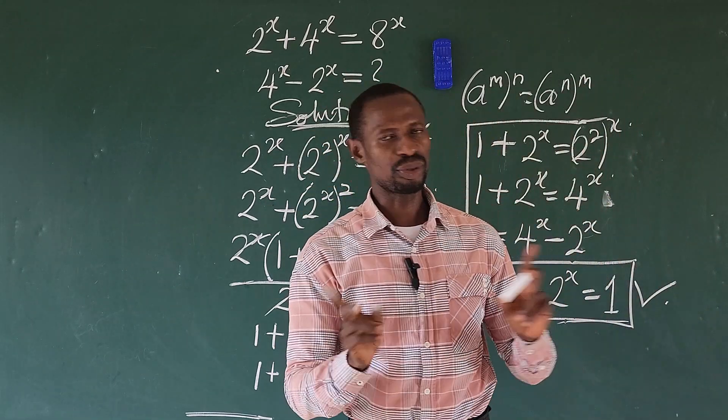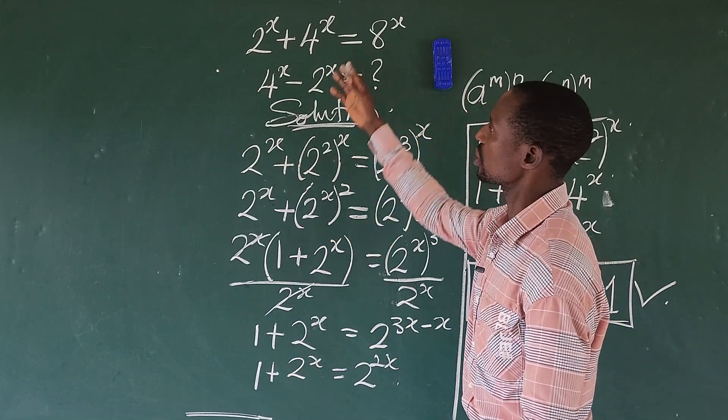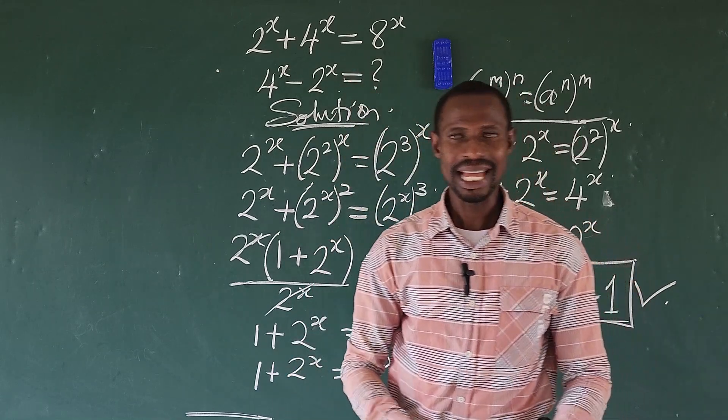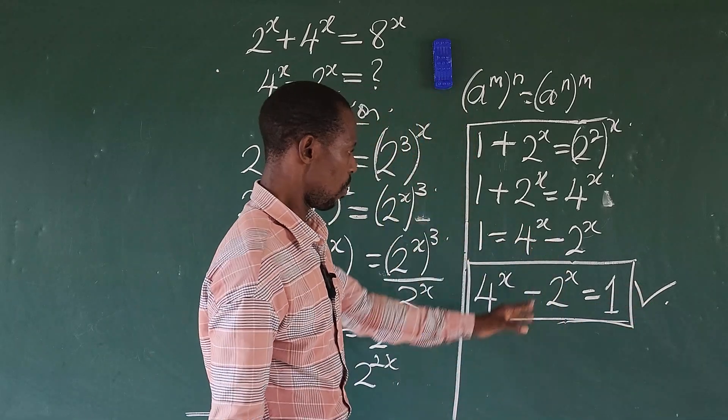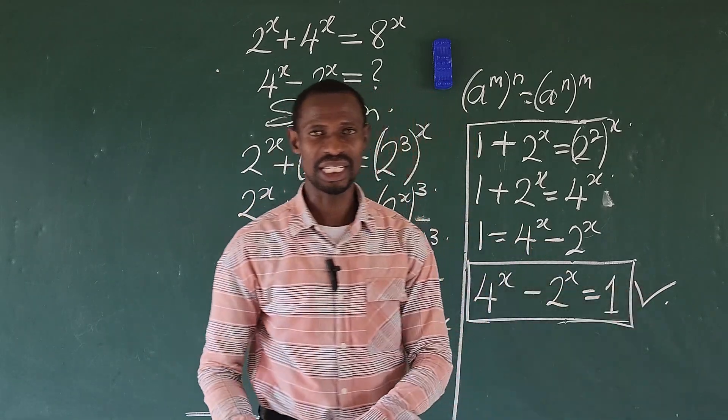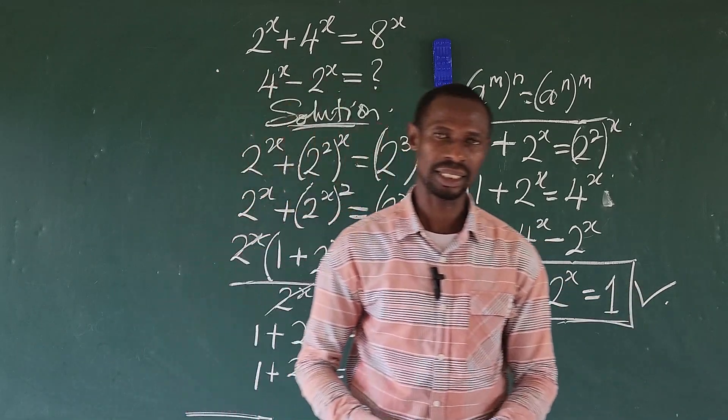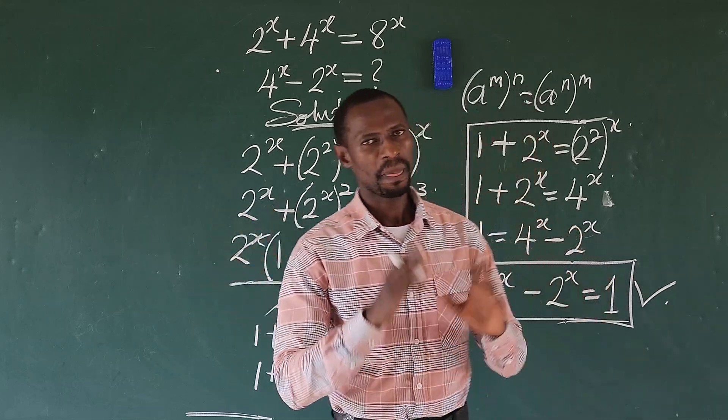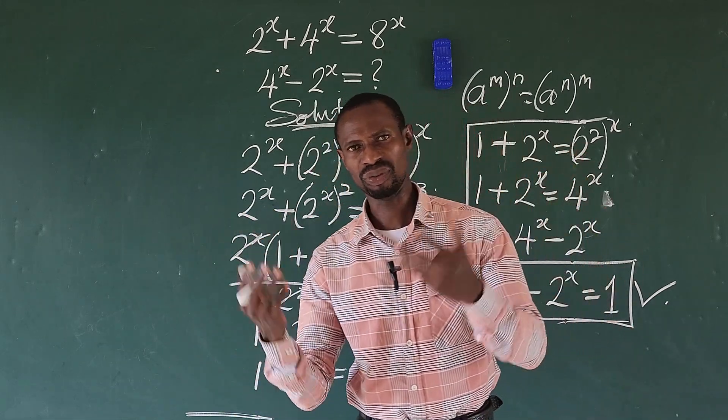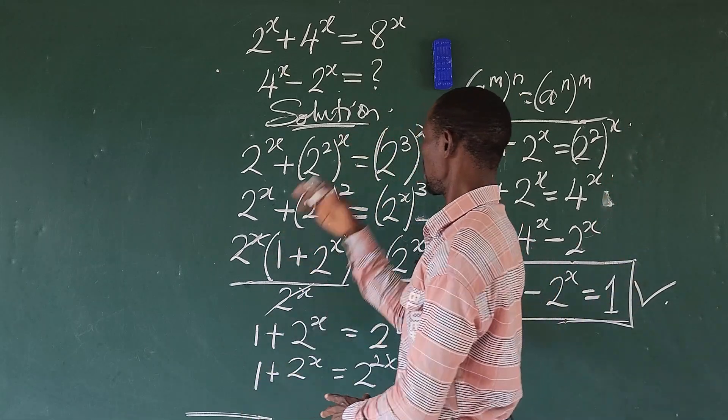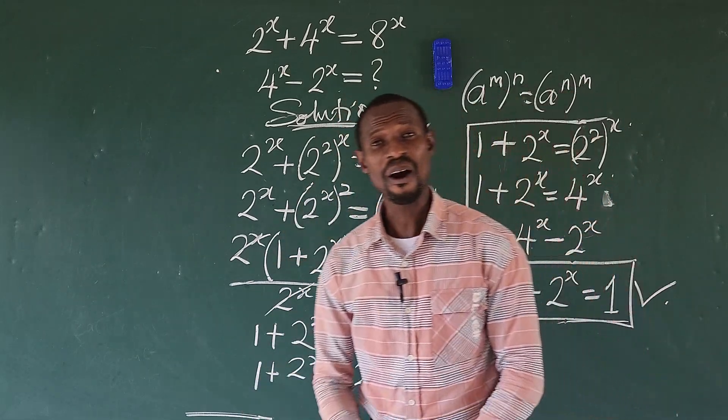And again, I said if we are to use the other method, whereby we solve for the value of x first, then substitute into this expression to get our answer, it will still give us 1. It will still give us this answer, but that method is lengthy because that will lead to a quadratic equation.